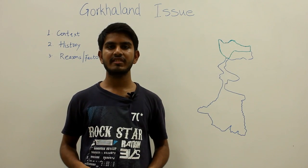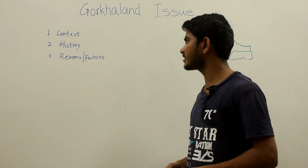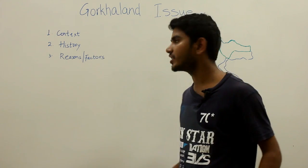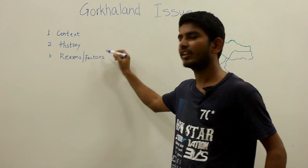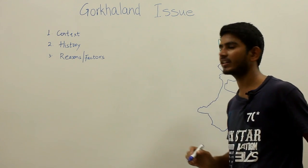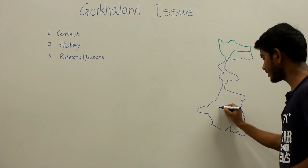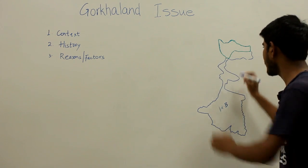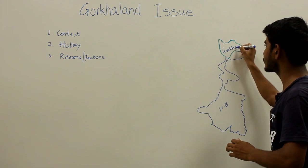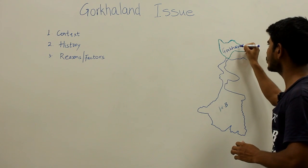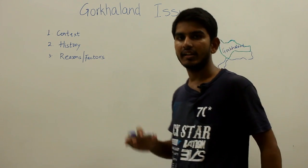Hello friends, in this video let us discuss the Gorkhaland issue which is taking place in West Bengal. This is a political demarcation of the West Bengal state, and the green color portion shows the Gorkhaland region of West Bengal. The long-running demand for the separate state of Gorkhaland has taken on new life, worsening conditions in the hill districts.